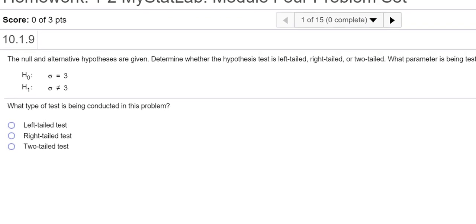Hello class. In this video I wanted to answer the first couple of problems from your homework assignment number four, module four. So the first question says the null and alternative hypotheses are given. Determine whether the hypothesis is left-tailed, right-tailed, or two-tailed. What parameter is being tested?